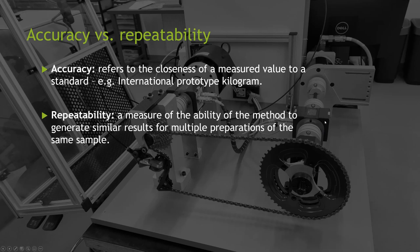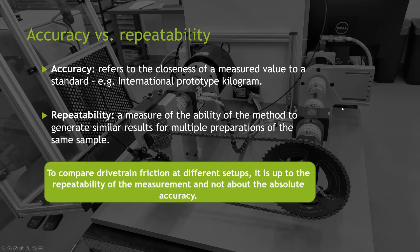The second thing, which is way more important when you're trying to optimize something — in our case, measuring drivetrain friction and power loss — we're interested more in repeatability rather than accuracy. Repeatability is a measure of the ability of the method or instrument to generate a similar result for multiple preparations of the same sample. What that means: every time you put the same weight on your scale, you want to see the same number. And if you change that weight — add a little more or reduce some — you want to see the difference in that reading. That comes down to repeatability, not accuracy.